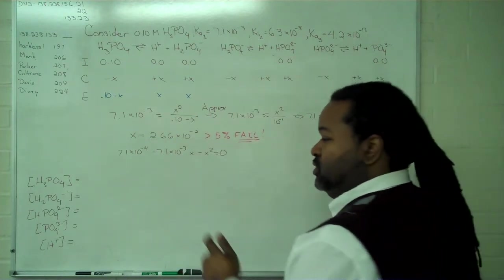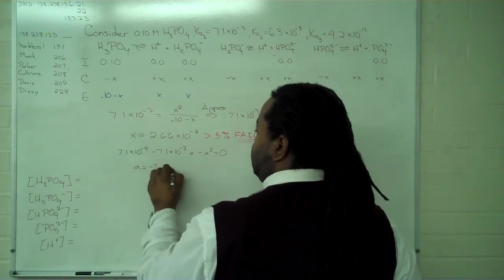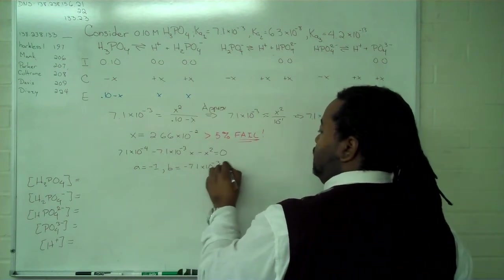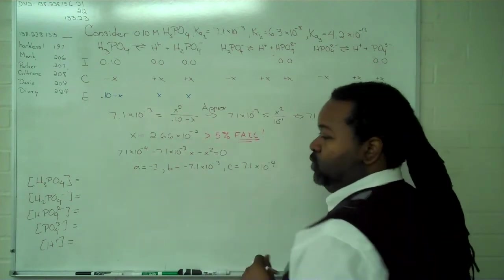Because this is our quadratic, we have the following values: a equals negative 1, b equals negative 7.1 times 10 to the minus 3, and c equals 7.1 times 10 to the minus 4.